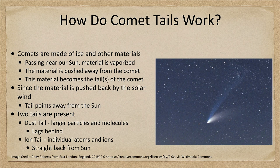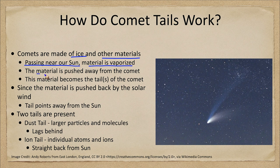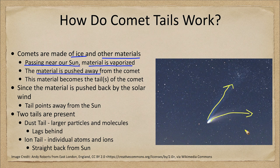What is a comet? Well, comets are balls of ice and other generally carbonaceous materials, and when they pass near our Sun the material is vaporized and that gives us the comet that we see. That material is pushed away from the comet and gives us these tails. We can actually see two tails here — one going pretty much straight back from the head of the comet and another that kind of curves off to the side.